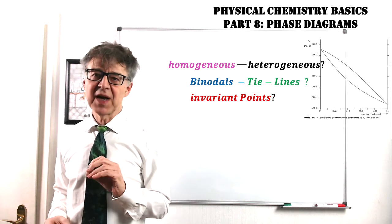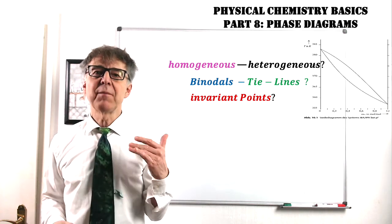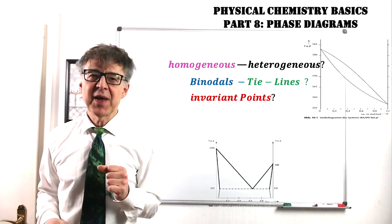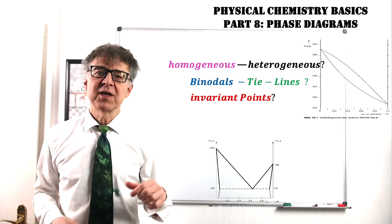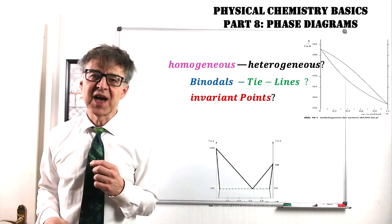Ideal phase diagrams, whether boiling or melting phase diagrams, show neither maximum nor minimum for the binodals. Non-ideal mixtures may have maxima and minima, which are called azeotrope, peritectic, or eutectic, depending on the type of diagram.